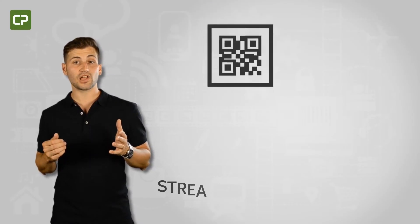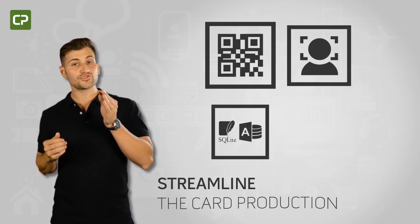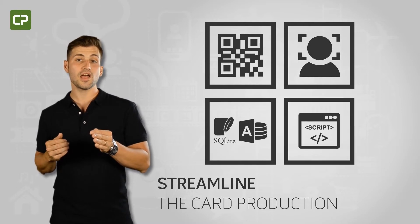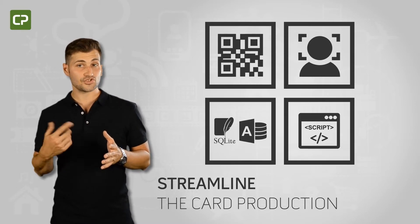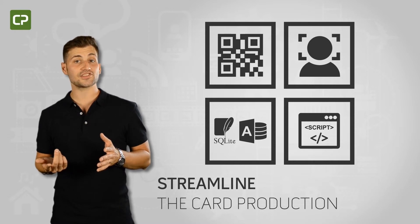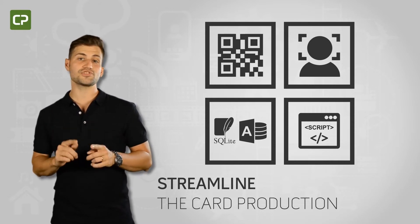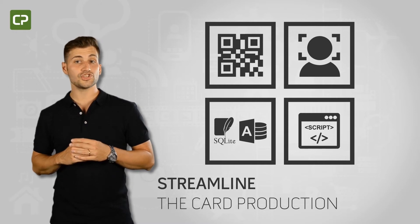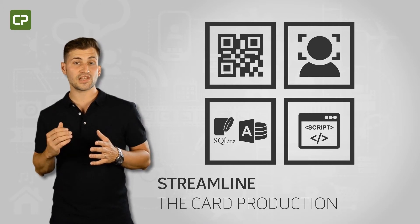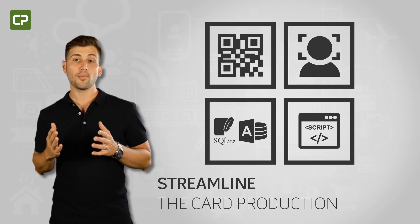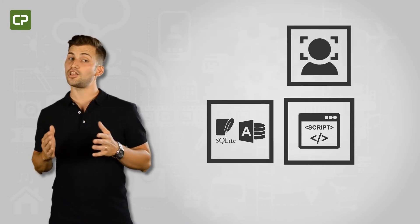XM Edition streamlines and responds to your photo ID printing needs by automating the photo editing process, connecting directly to your MS Access and SQLite database, and allowing you to personalize the card printing workflow to your needs through script. These features translate into fewer mistakes, greater efficiency, better service and security, and a lot of time saved.